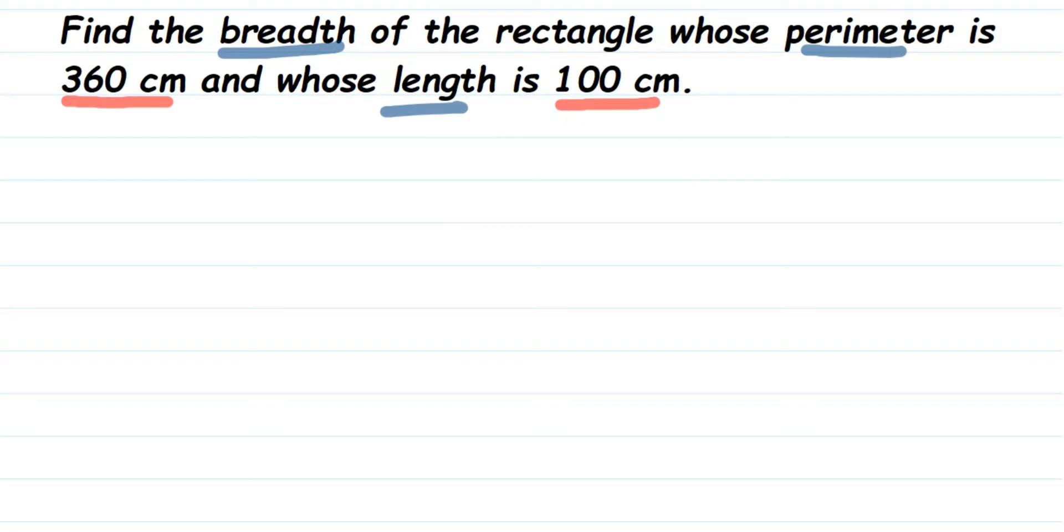One is length. Length is equal to 100 cm. And we know the perimeter. Perimeter is capital P and length is small l. P is equal to 360 cm. And what we have to find out? We have to find out the breadth. Small letter b represents the breadth. We do not know the breadth. Let us use the formula here.